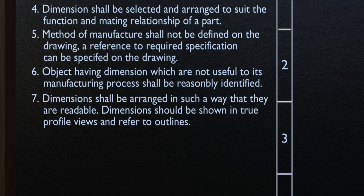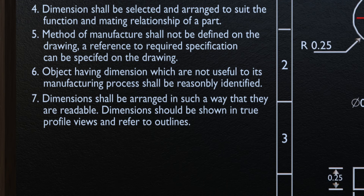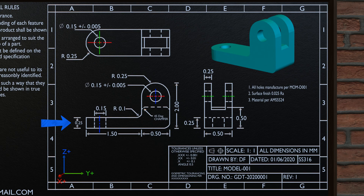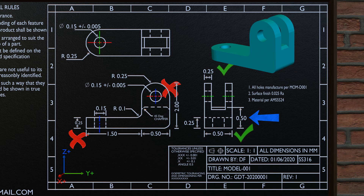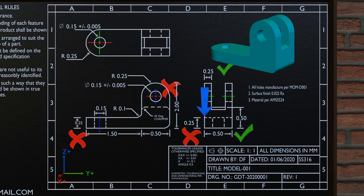The seventh fundamental rule says dimensions shall be arranged in such a way that they are readable. Dimensions should be shown in true profile views and refer to outlines. This dimension of 0.25 is a bit difficult to read, hence not in line with this rule. The right way of expressing this dimension is shown here. Also, a dimension whose orientation is not the same as others is not a good practice under this rule. Furthermore, using one profile line and one hidden (dotted) line for dimensioning is not good practice — in brief, we should minimize the use of dotted or hidden edges for dimensioning purposes.